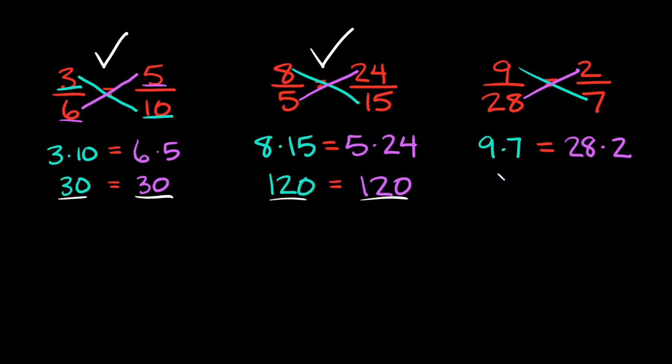Now 9 times 7 is equal to 63. And then I'm going to set that equal to—what's 28 times 2? Well 28 times 2 is equal to 56. So as you can see 63 does not equal 56. So that means these two fractions up here are not proportional. That means they are not equal to each other.